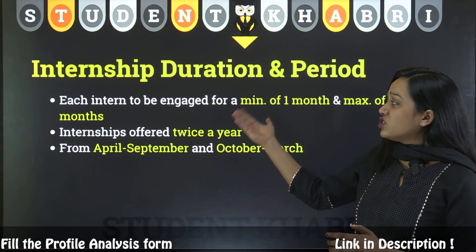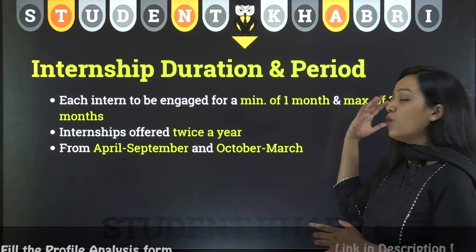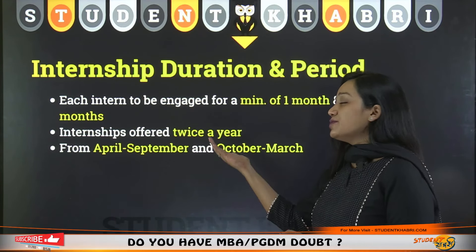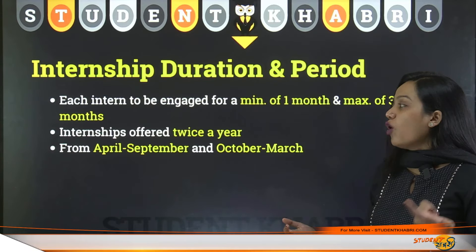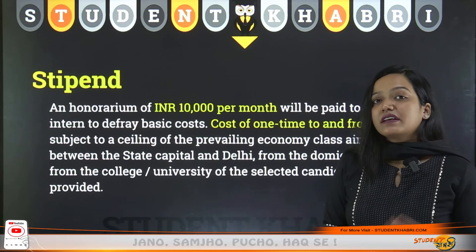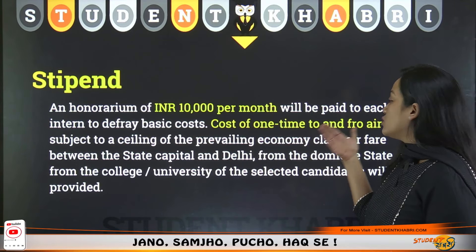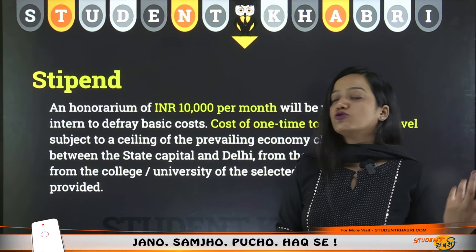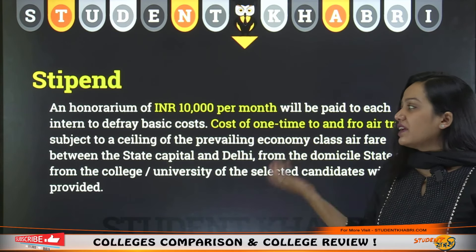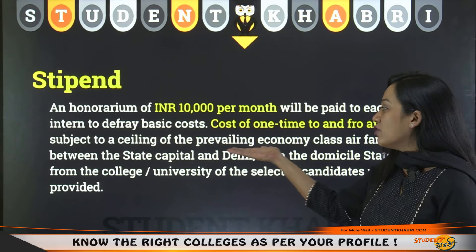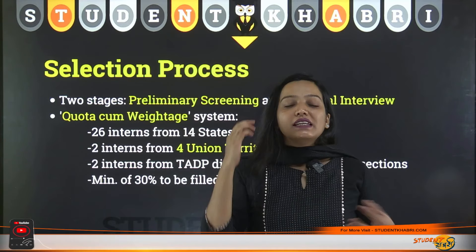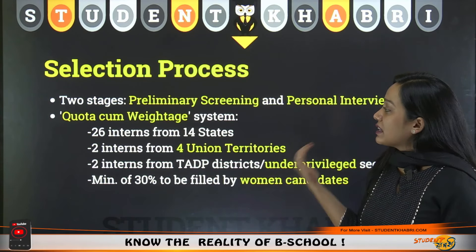Regarding duration: each intern is engaged for a minimum of one month and a maximum of three months. The internship is offered twice a year — from April to September, and from October to March. The stipend is ₹10,000 per month, which is paid to every selected intern. Additionally, the cost of one-time travel — either air travel economy class subject to the prevailing ceiling — is also offered, and you can relocate accordingly.